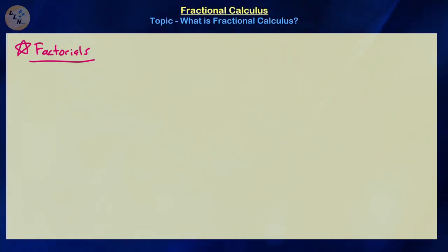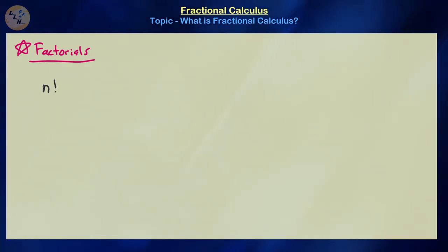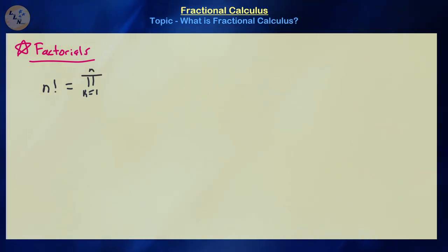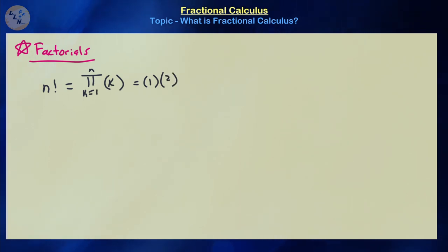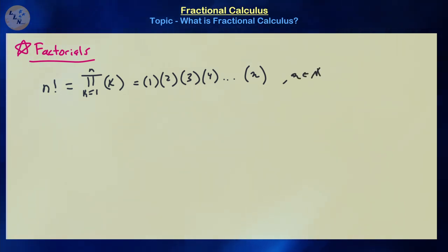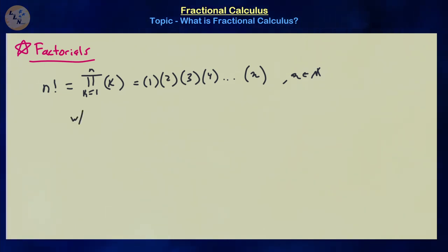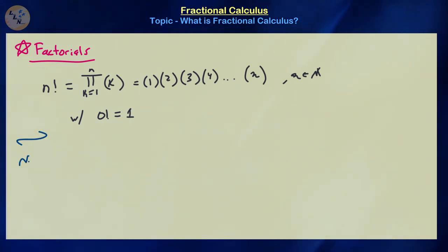The first basic question is: what is a factorial? The factorial of a natural number n, denoted by an exclamation mark, is defined to be the product from k equals 1 to n of k. That means it equals 1 times 2 times 3 times 4 all the way up to n. There's also a special definition that 0 factorial equals 1, and that allows several other properties to look beautiful.